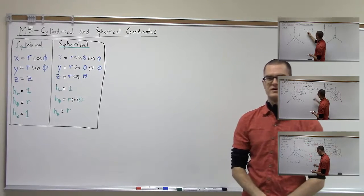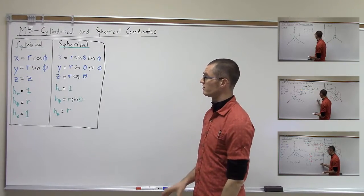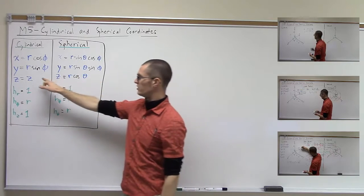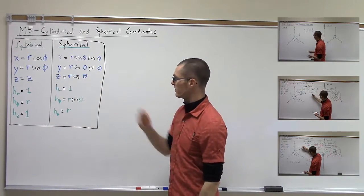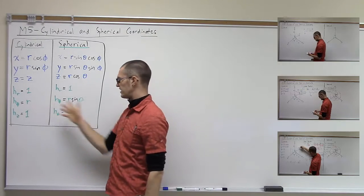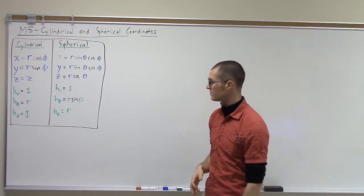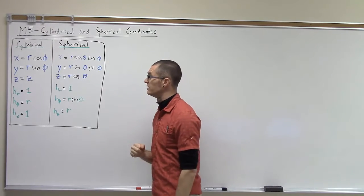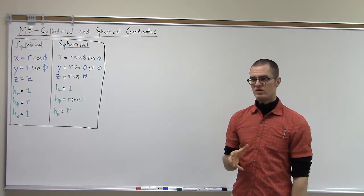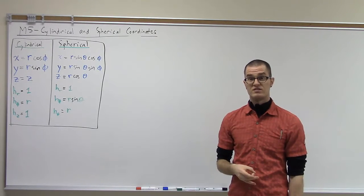In our previous three videos on the curvilinear coordinates — the cylindrical and spherical coordinates — we defined the basic relationships between the curvilinear coordinates and the Cartesian coordinates. We had a look at the scale factors that tell us what is the path length in a curvilinear system given small changes in the coordinates, and we also looked at how we define the unit vectors in the curvilinear coordinate systems.